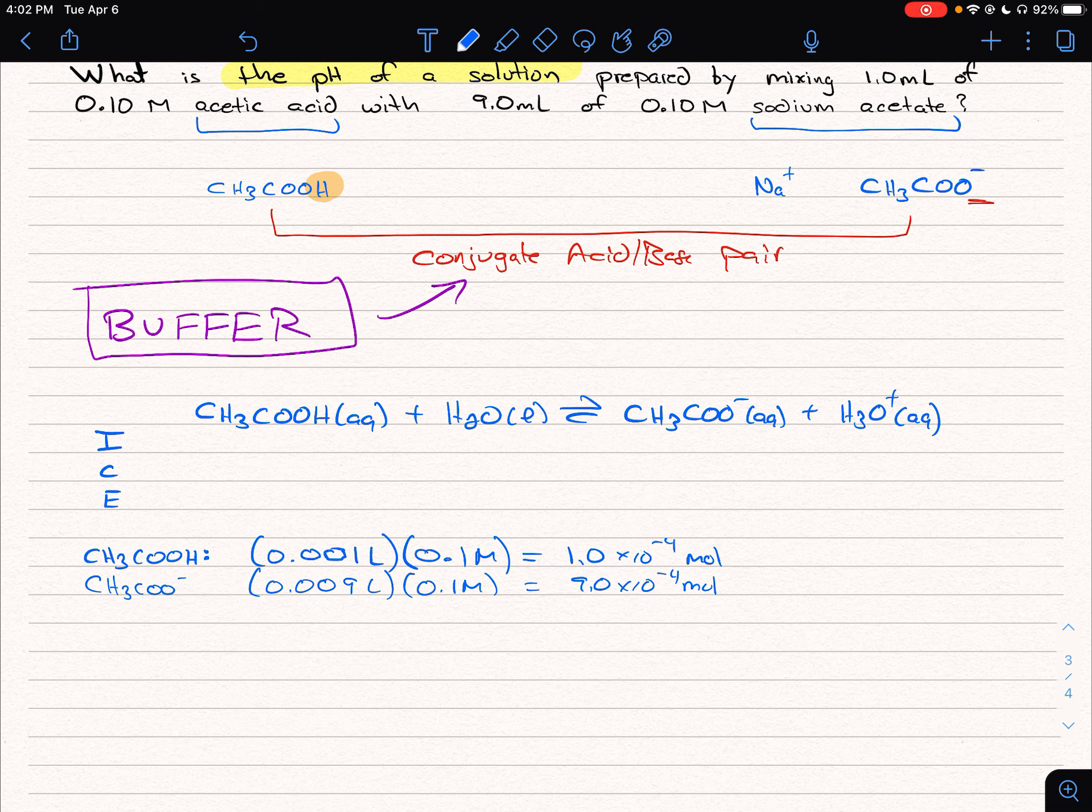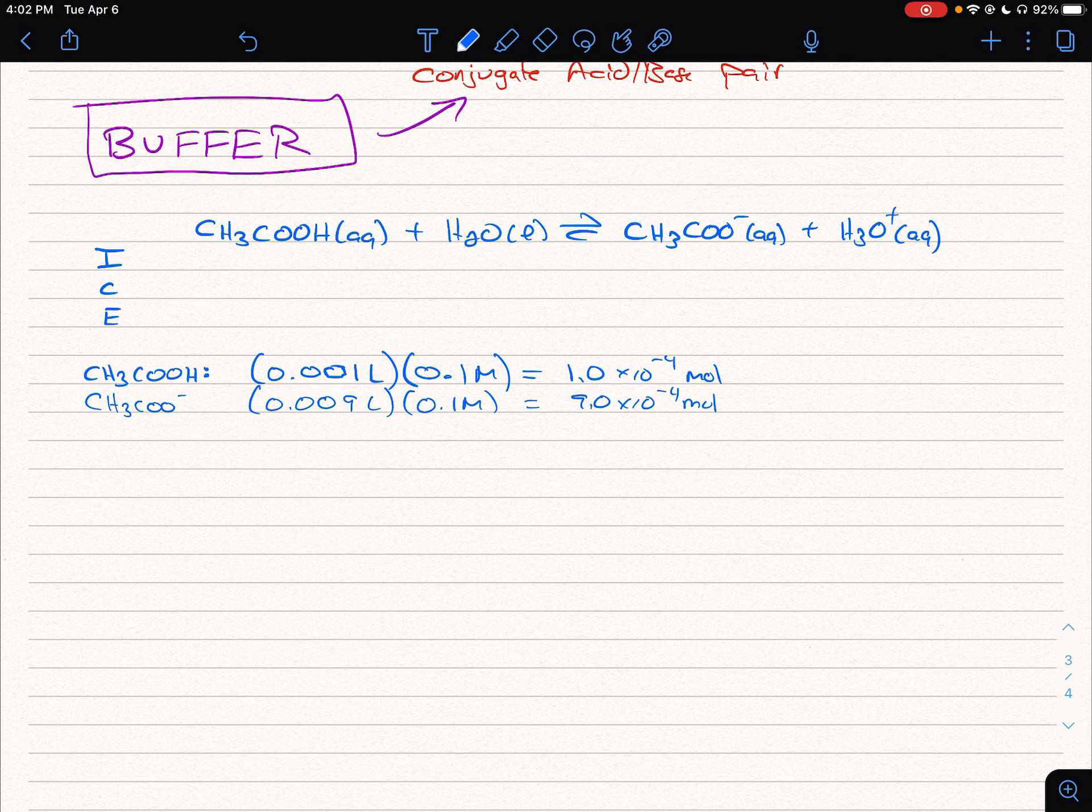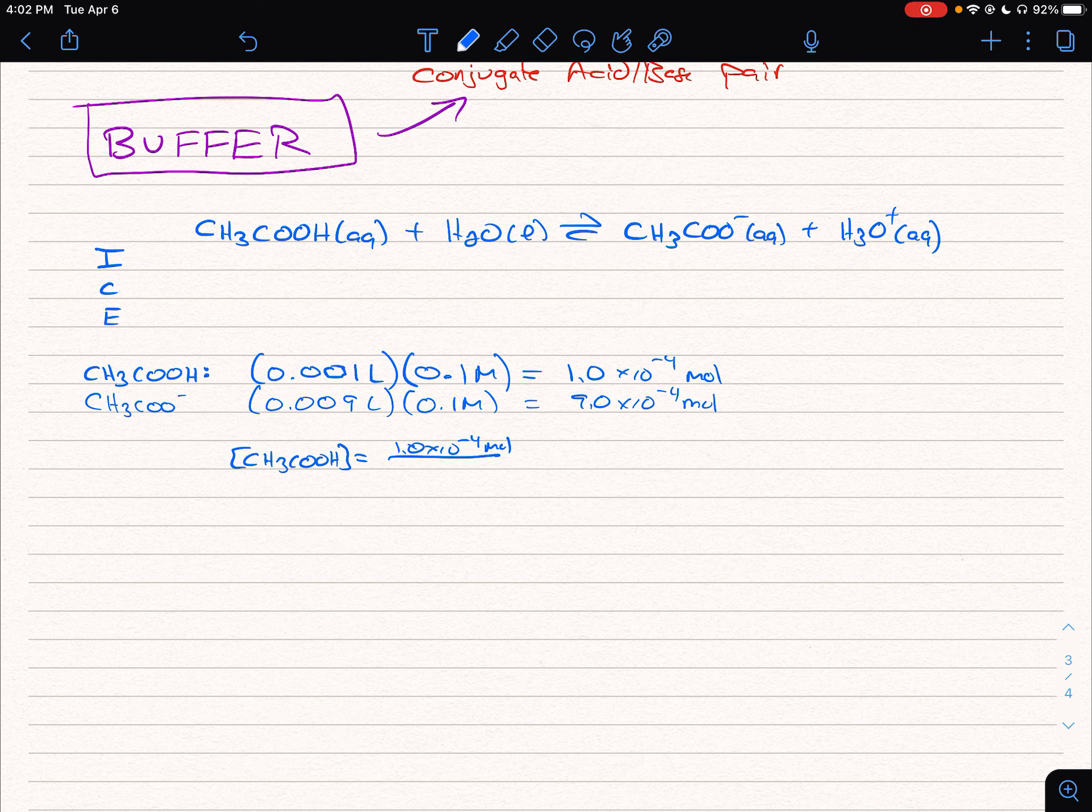So now we can find the concentration of each. The concentration of acetic acid is going to be 1.0 times 10 to the negative 4th moles divided by 0.01 liters. And the concentration of acetate is 9.0 times 10 to the negative 4th over 0.01 liters. So our two concentrations we end up with are 0.01 M and 0.09 M.